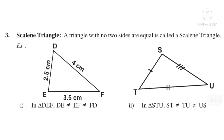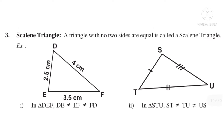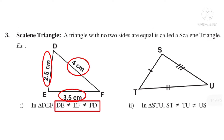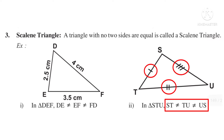Number 3: Scalene Triangle. A triangle with no two sides equal is called a scalene triangle. For example, in triangle DEF, DE ≠ EF ≠ FD — all are of different lengths — so it is called a scalene triangle. In triangle STU, ST ≠ TU ≠ US. All are represented by a different number of strokes on the sides, so it is also a scalene triangle.